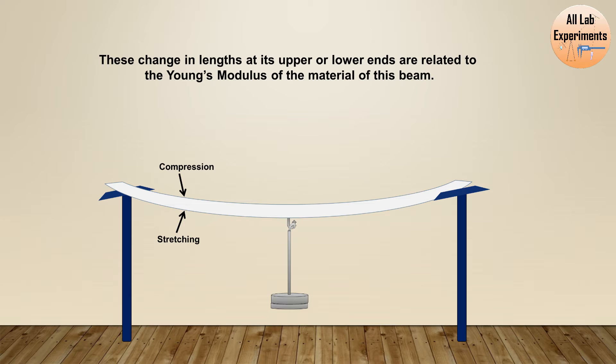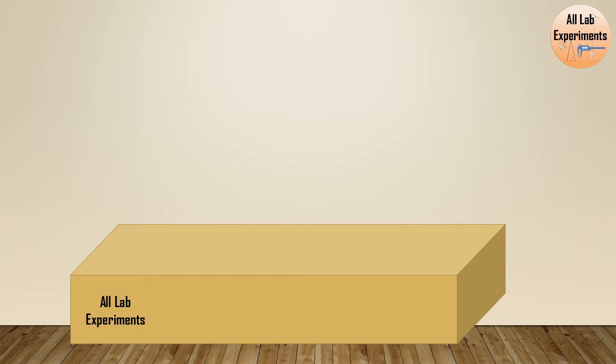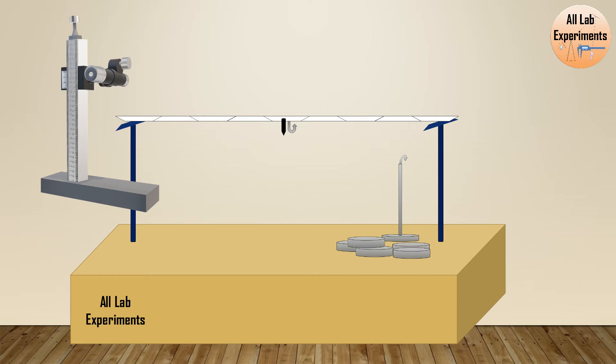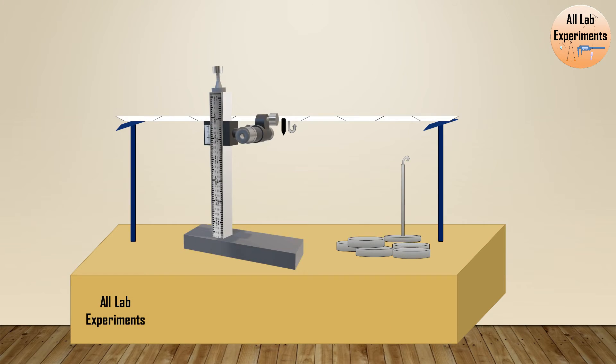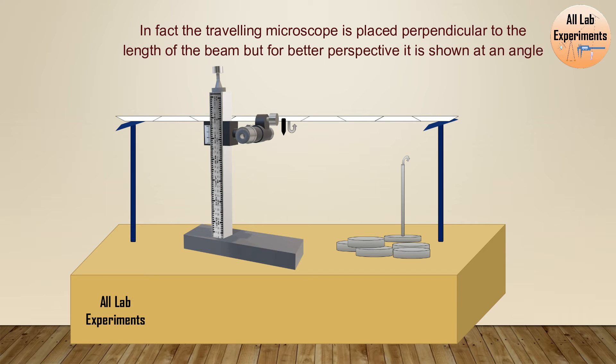First of all, we need a bench. On this bench we have two wedges on which a metal rod can be placed. This metal rod has one hook and one pin attached to it. We can hang some weight from this hook and we can also increase this weight as per the requirement. We also have a traveling microscope like this. We can place it like this and focus on this pin.